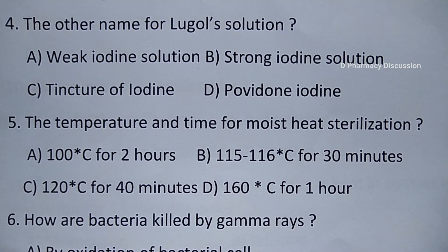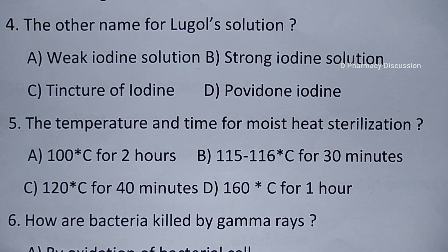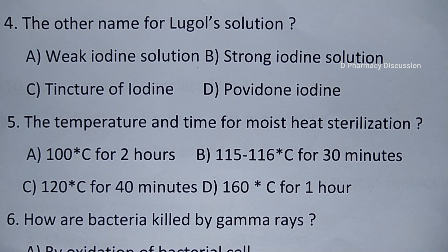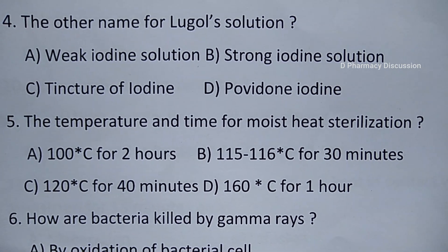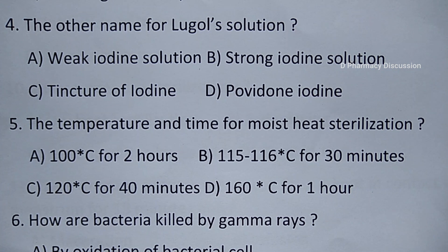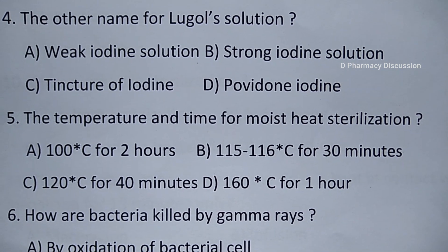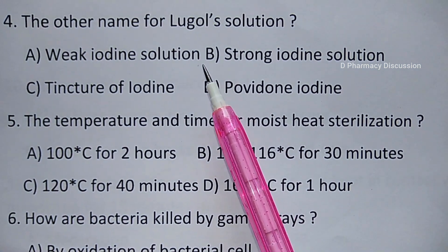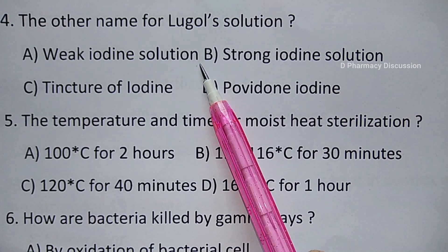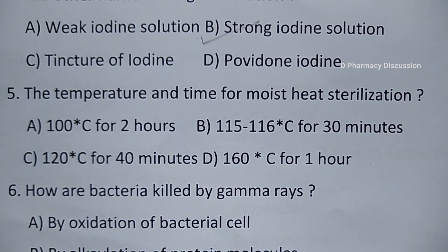Question number 4: the other name for Lugol's solution. Option A. Weak iodine solution, B. Strong iodine solution, C. Tincture of iodine, and option D. Povidone iodine. Correct answer is option B, that is Strong iodine solution.